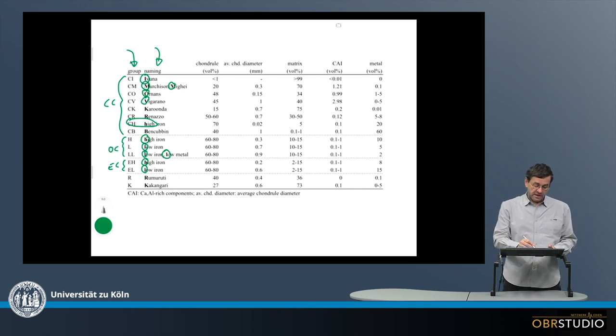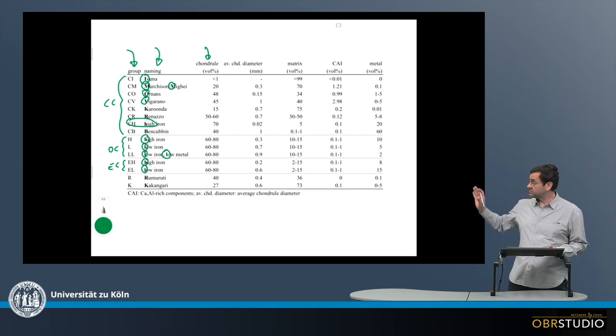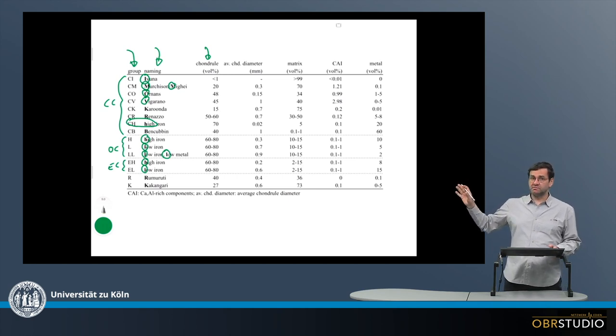Then the following columns are the fundamental properties. So for example, the number of chondrules. Chondrules are one of two major components. The second is matrix, as can be clearly seen from this table, as chondrules and matrix together usually make up more than about 90 volume percent of the meteorite.